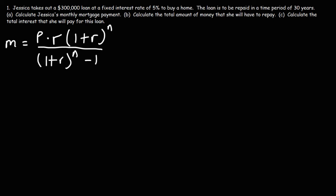So let's write down what we know. The principal is the mortgage, $300,000. That's how much she's borrowing to buy the house. Now the interest rate is 5%, but we need to convert that into a decimal. To do that, you can move the decimal two units to the left or divide 5 by 100. 5 divided by 100 is 0.05. Now this will be the annual interest rate. We wish to calculate the monthly payments.